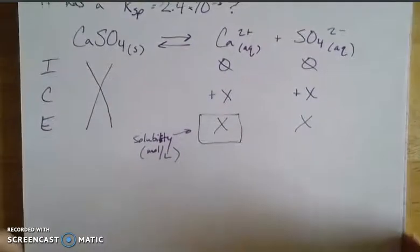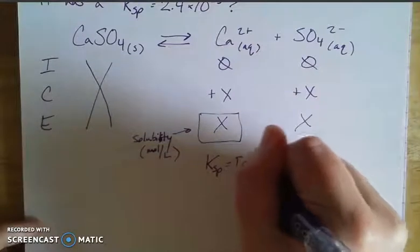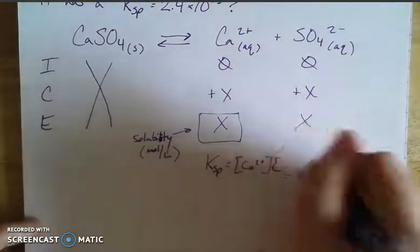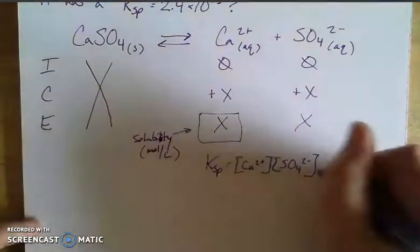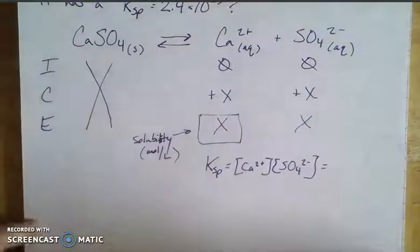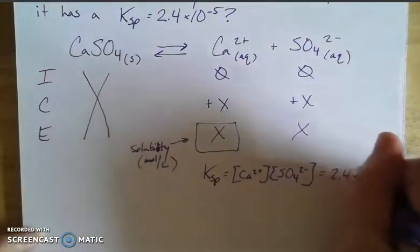If we think about the Ksp expression for this, it's going to be equal to the calcium ion concentration times the sulfate. And it's one to one, so we don't have any exponents here. And this is going to be equal to the value that we were given in the problem above, 2.4 times 10 to the negative fifth.